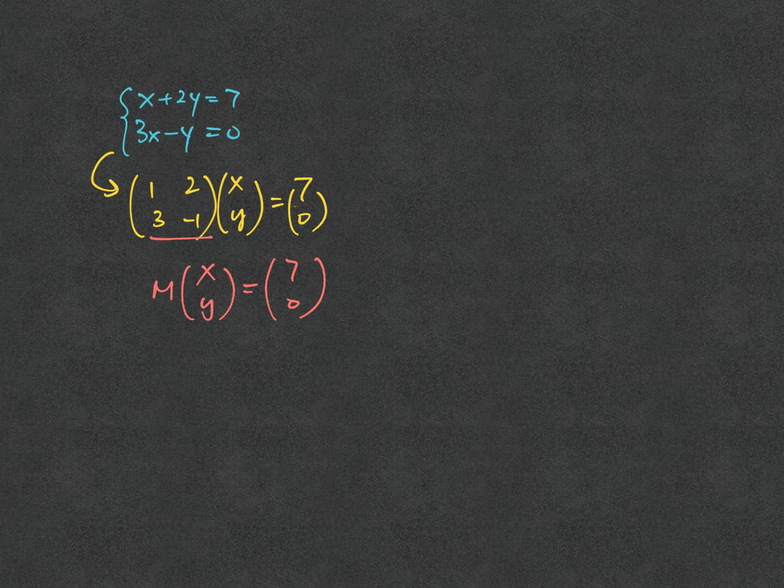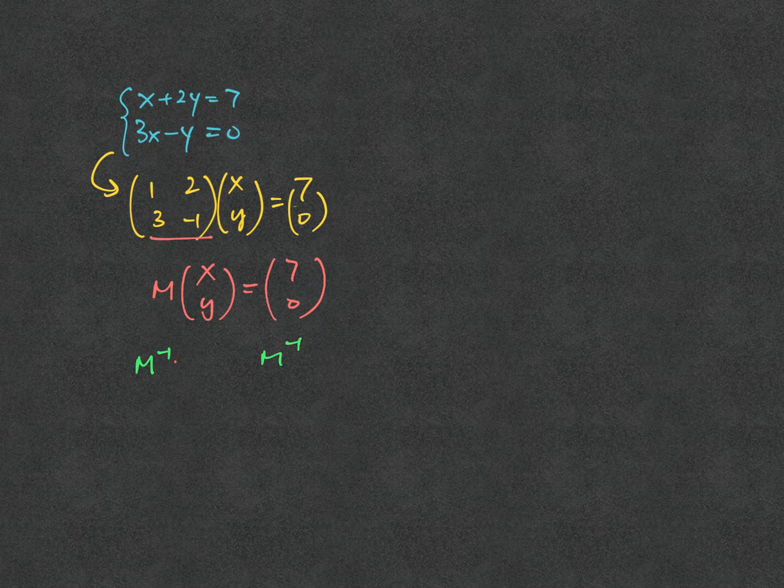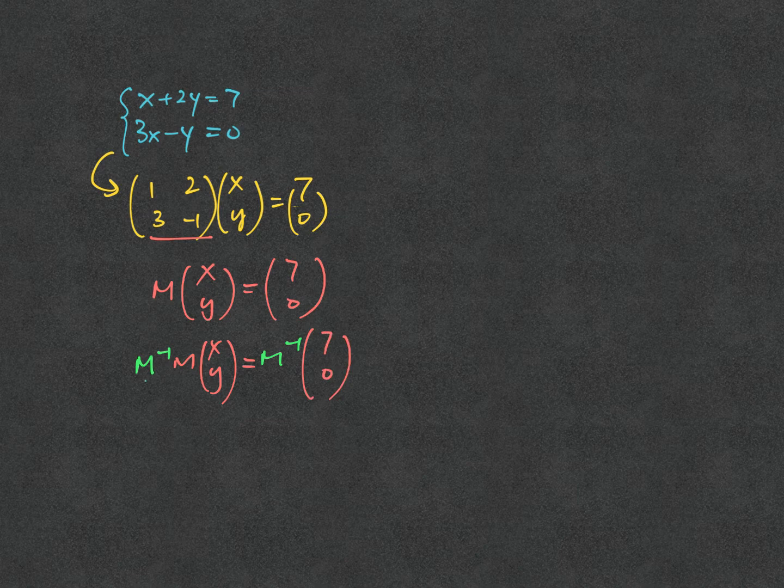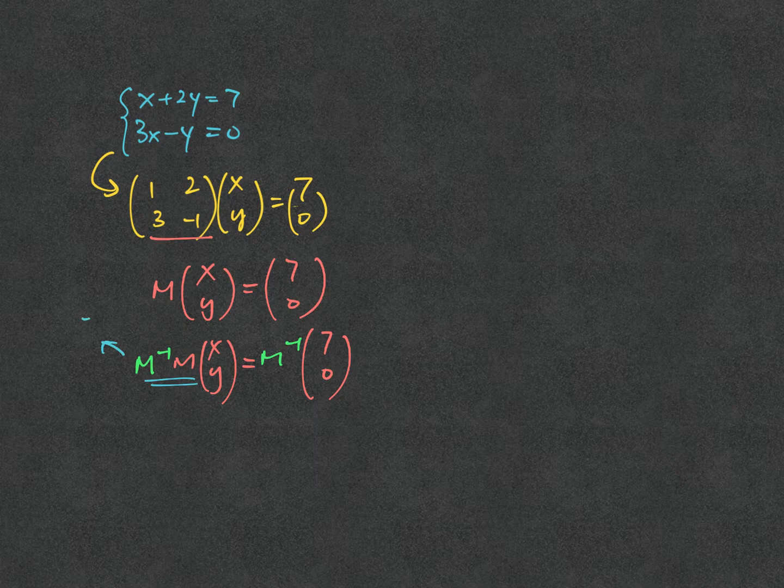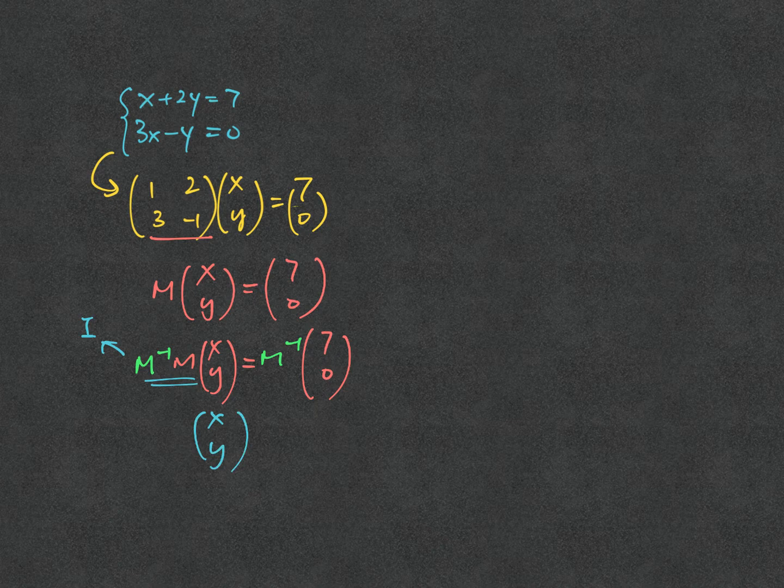If M inverse exists, we can multiply M inverse on both sides. So that's why you have M inverse multiplied to M, (x, y), equal to M inverse of (7, 0). The effect of M inverse multiplied to M will give you the identity matrix I. On the left hand side, we have only (x, y) left behind.